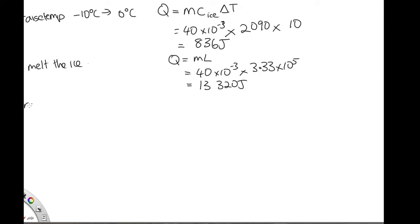Next, we have to raise the temperature from 0°C to 100°C. This is now all water. Q equals m times C_water times the change in temperature, which is 40 times 10 to the minus 3 times 4,186 times 100 degrees. This gives us 16,744 joules.